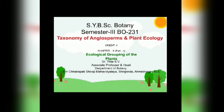The second type is psammophilous halophytes. These plants grow on sand, rocks, or stones. They can be called false mangroves. For example, Ipomoea biloba. Next we must see the adaptations in halophytes.